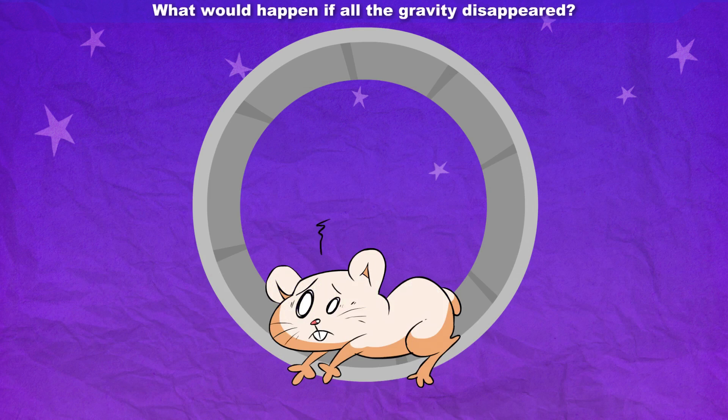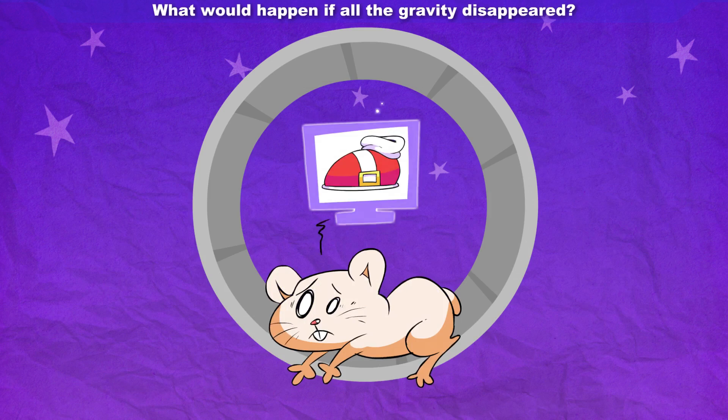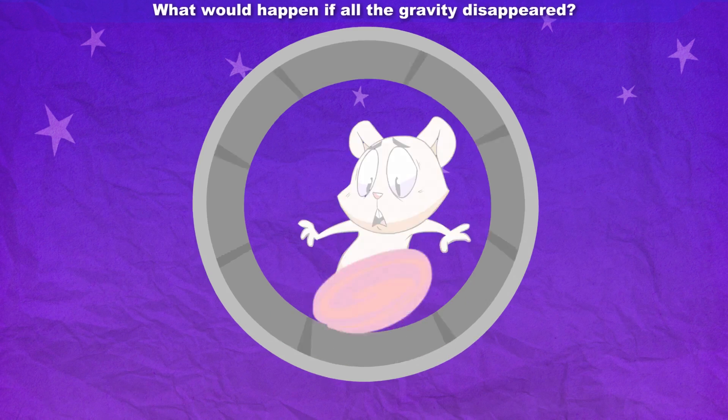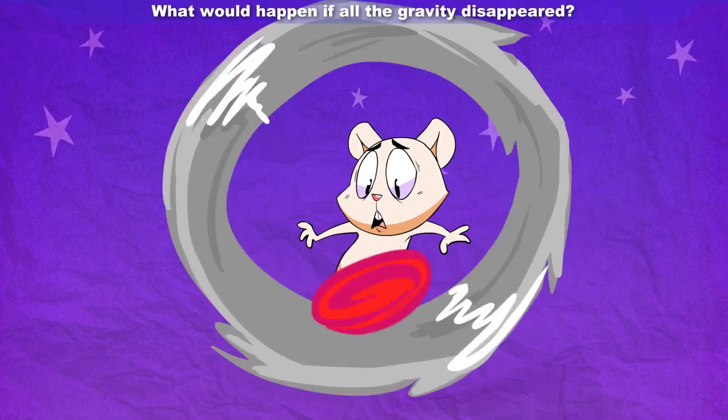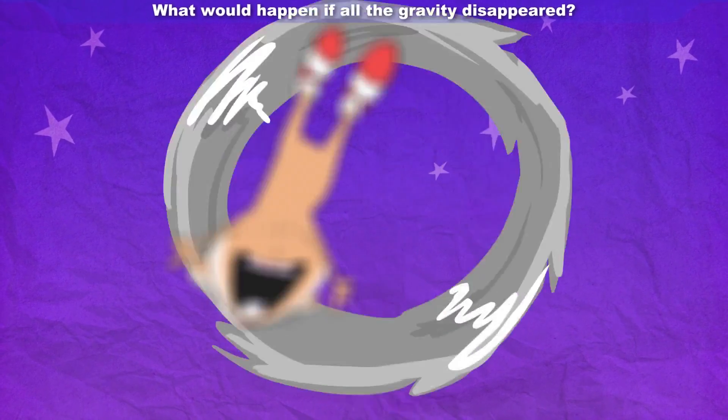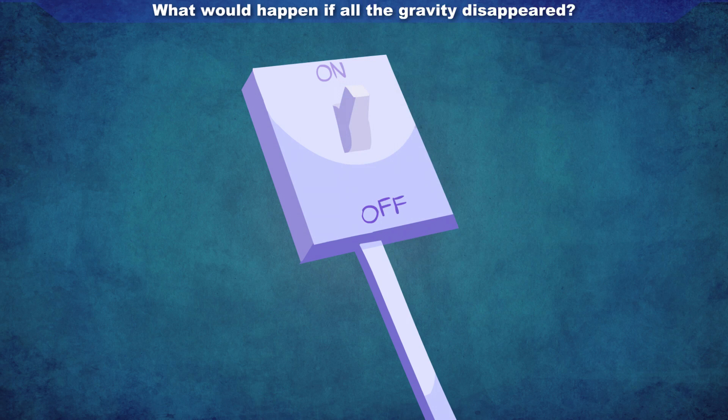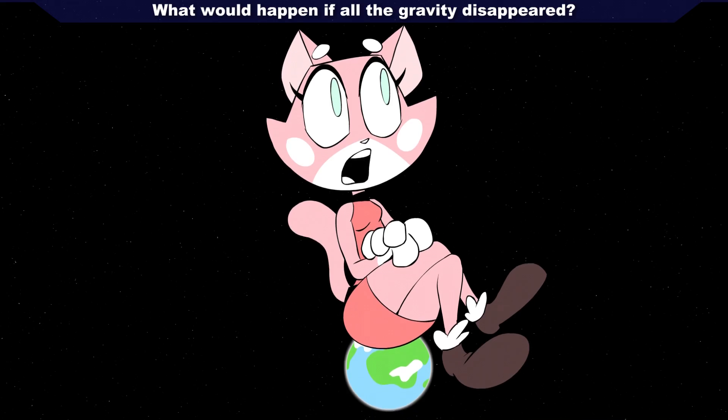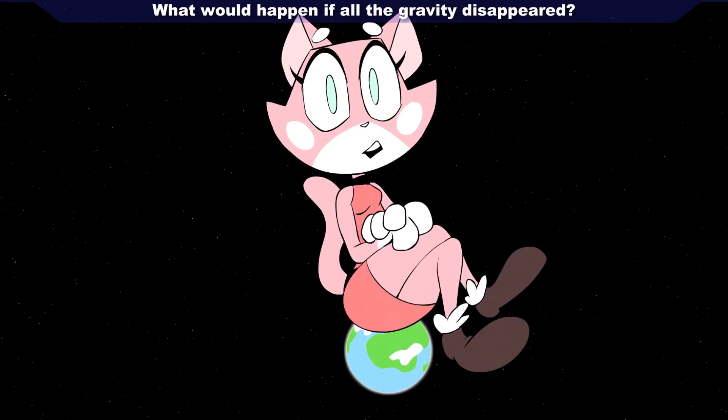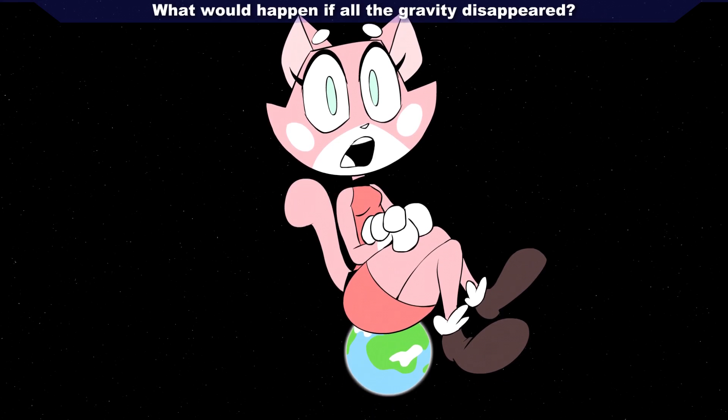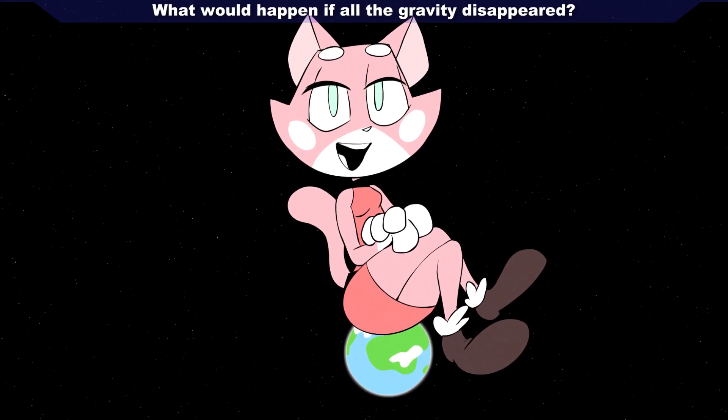Number 4: What would happen if all the gravity disappeared? You would simply need to replace the hamster on the hamster wheel that's running around powering the Earth. If that doesn't restore gravity, then we're going to need to turn the Earth off and turn it back on again. That should solve the problem. We would all float away into outer space because there would be nothing holding us onto the surface of the planet, but don't worry, gravity isn't going anywhere.